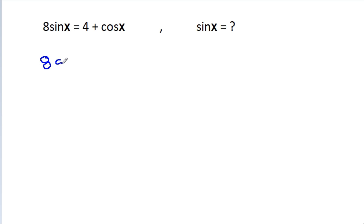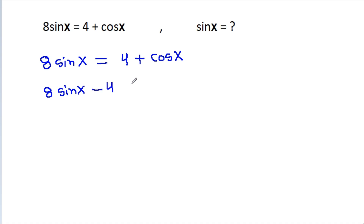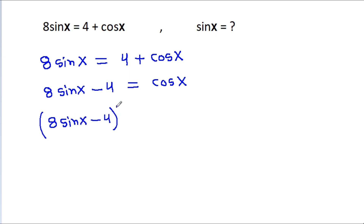We have 8 sin x is equal to 4 minus cos x. So, 8 sin x minus 4 will be equal to cos x. If we square both sides, then (8 sin x minus 4)² will be equal to cos²x.